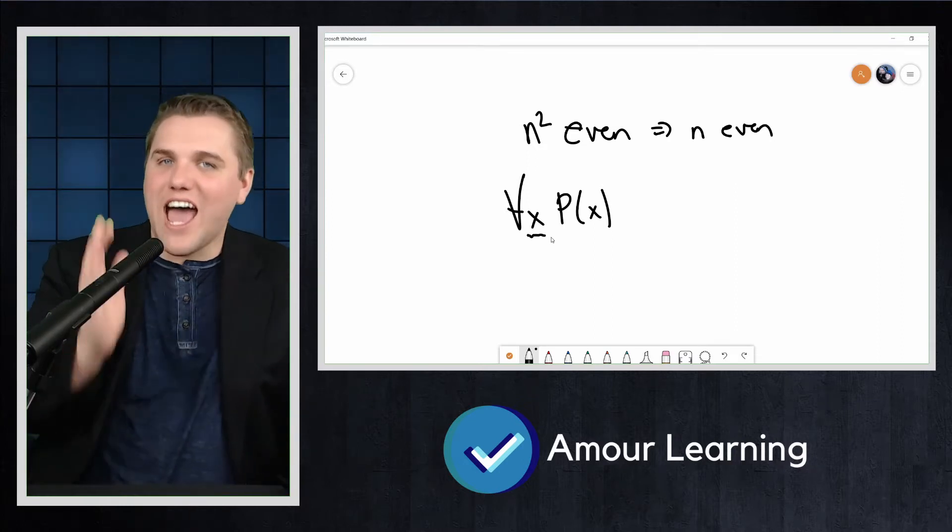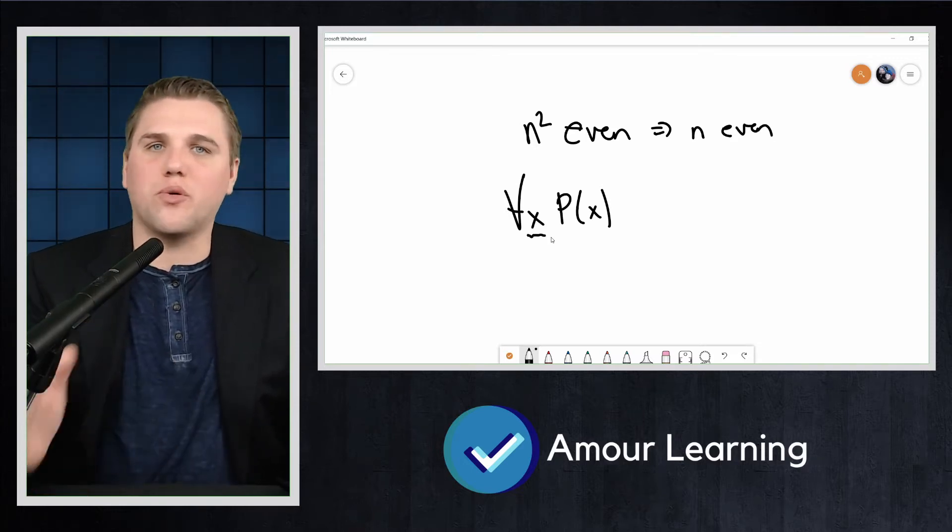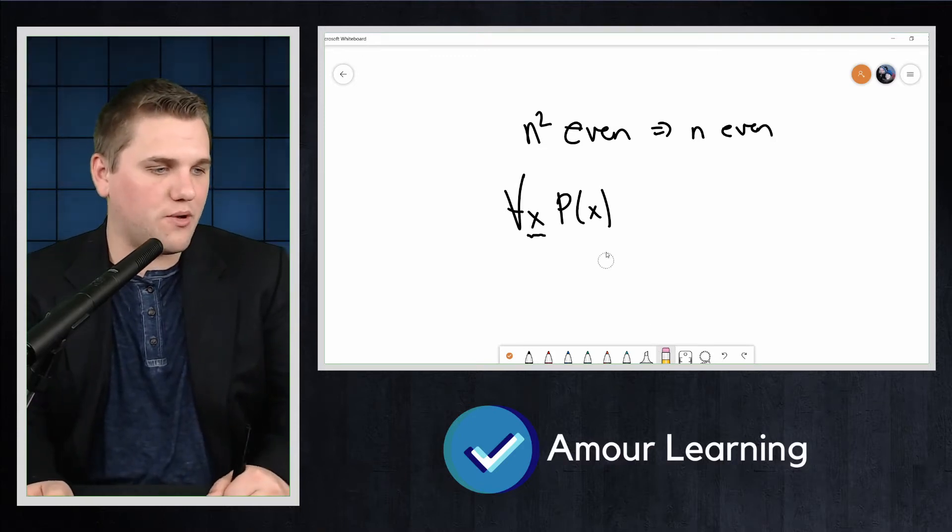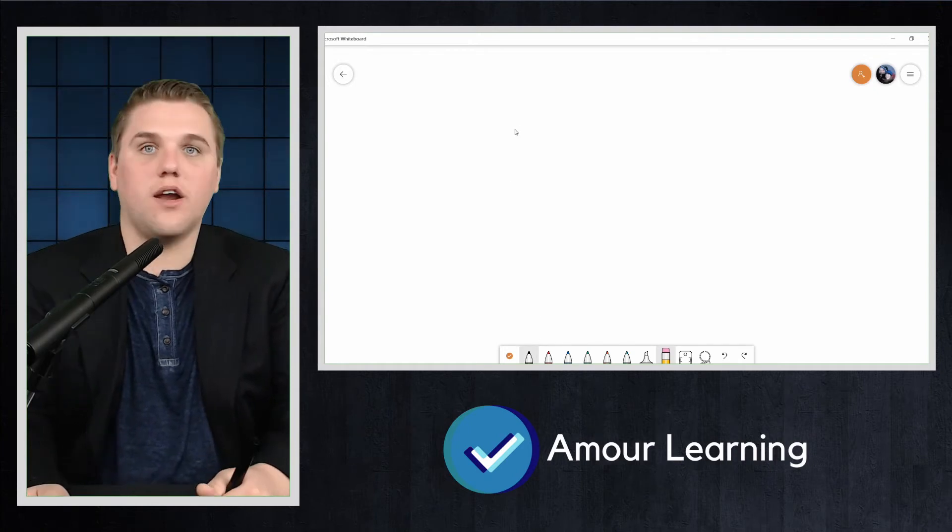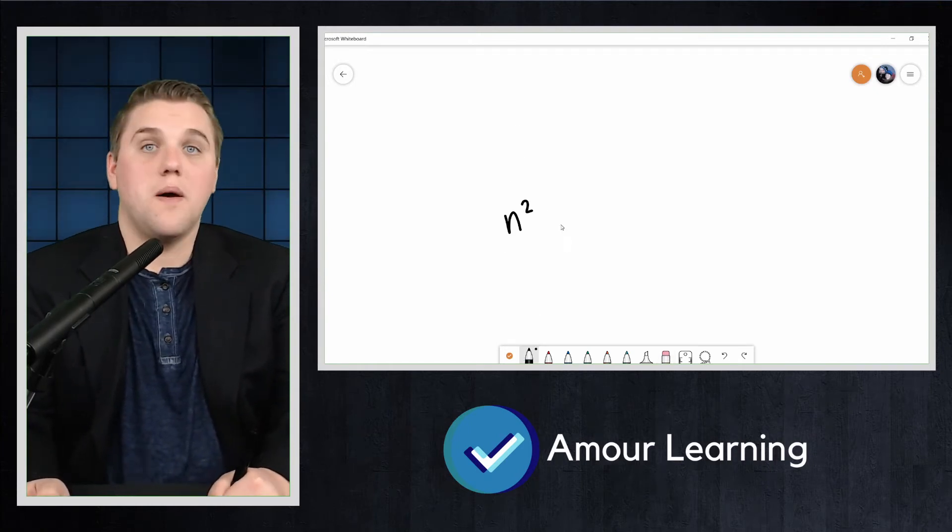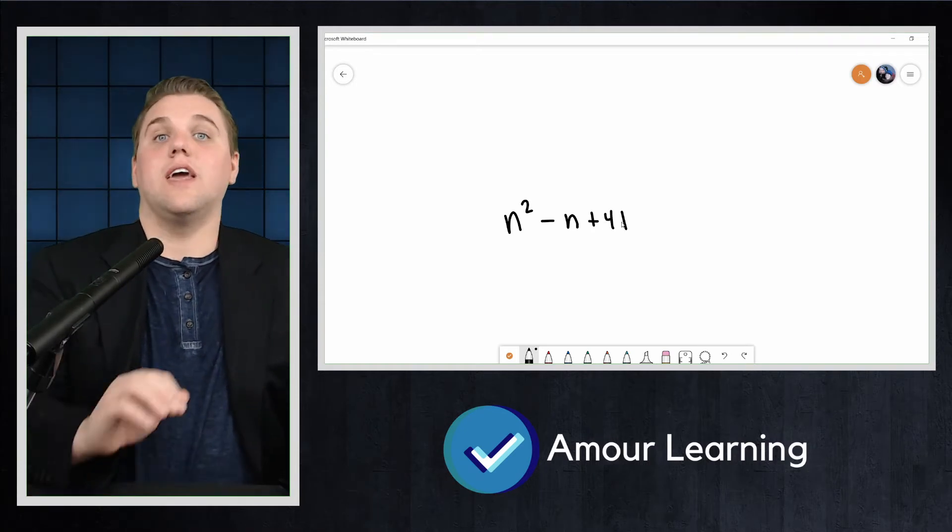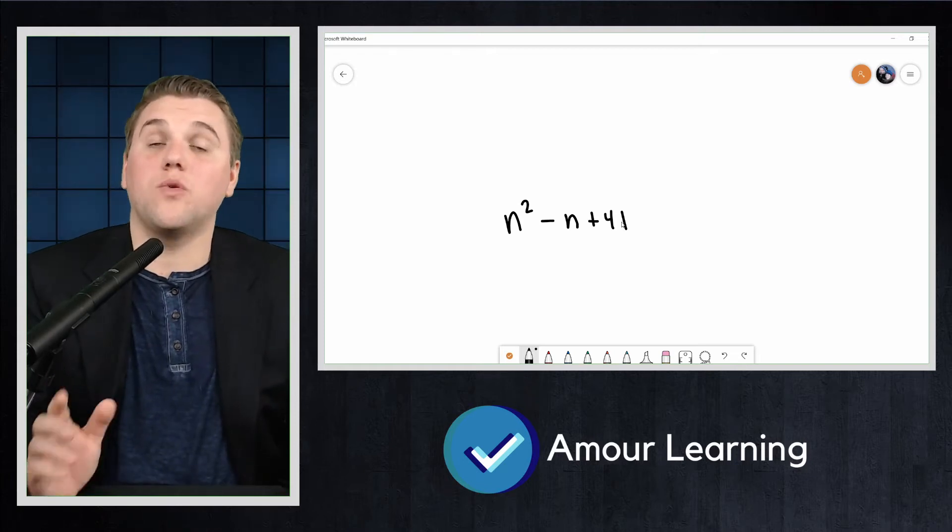However, existential statements can be proven this way. We want to prove that there is an integer n such that, for example, n squared minus n plus 41 is not prime.